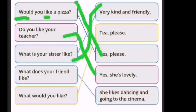The fourth sentence: 'What does your friend like?' This question asks about the things your friend enjoys doing. The answer is 'She likes dancing and going to the cinema.' You can also ask 'What does your mother like?' — and answer 'She likes cooking.'